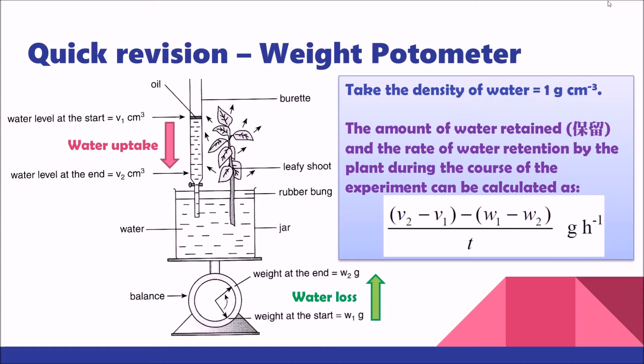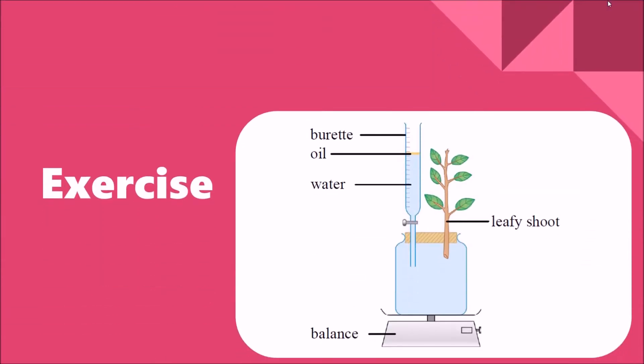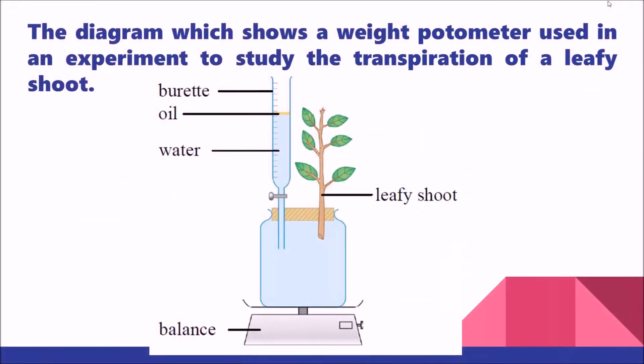Now let's take a look at a very typical exercise for the weight potometer. In the experiment setup, we put the leafy shoot in a jar full of water, with an oil layer on the water surface, and a balance underneath.